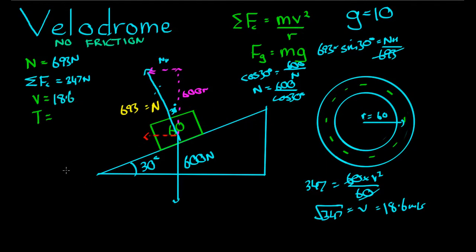Now the period. If he's traveling at 18.6 meters per second, and the circumference of the circle is 2πr, that comes to 120π. Then the time it takes equals the distance over the velocity, that's 120π divided by 18.6. That comes to 20.3 seconds. So it takes the cyclist 20.3 seconds to go around that velodrome.